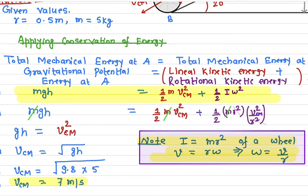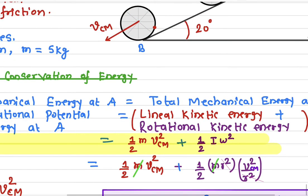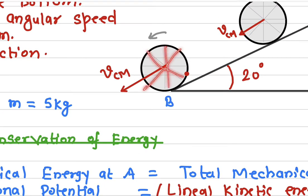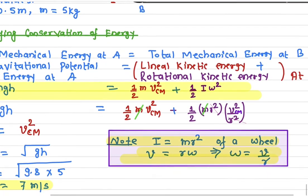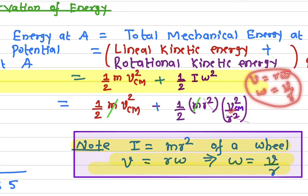Now let's write down all the values. For the moment of inertia: this is a bicycle wheel where all the masses are concentrated at the edges (at the circumference), so the moment of inertia of the wheel is mr². For ω, since v = rω, we have ω = v_cm / r, so ω² = v²_cm / r².